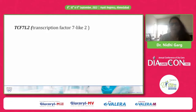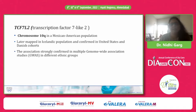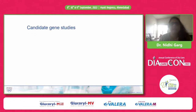TCF7L2 is the most common type 2 diabetic gene. It is situated on chromosome 10 and was first discovered in a Mexican-American population, later mapped to the Icelandic population, and confirmed in US and Danish cohorts. This association was strongly confirmed in genome-wide association studies in different ethnicities, making it the most strongly associated type 2 diabetic risk gene.